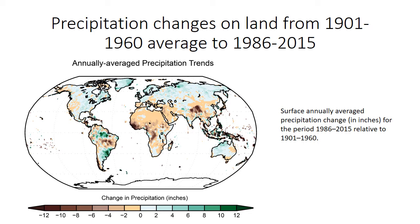One troubling finding is that while many places are predicted to see an increase in precipitation, some places that are already quite dry — such as the southwest United States, the northern part of Africa, the Middle East, drier portions of Australia, and large portions of the Amazon — are anticipated to experience greater losses of precipitation over time. As this graph shows, they're already experiencing those reductions. Many of these areas are already water-stressed, so additional loss of precipitation could be very problematic for food production and the availability of drinking water.